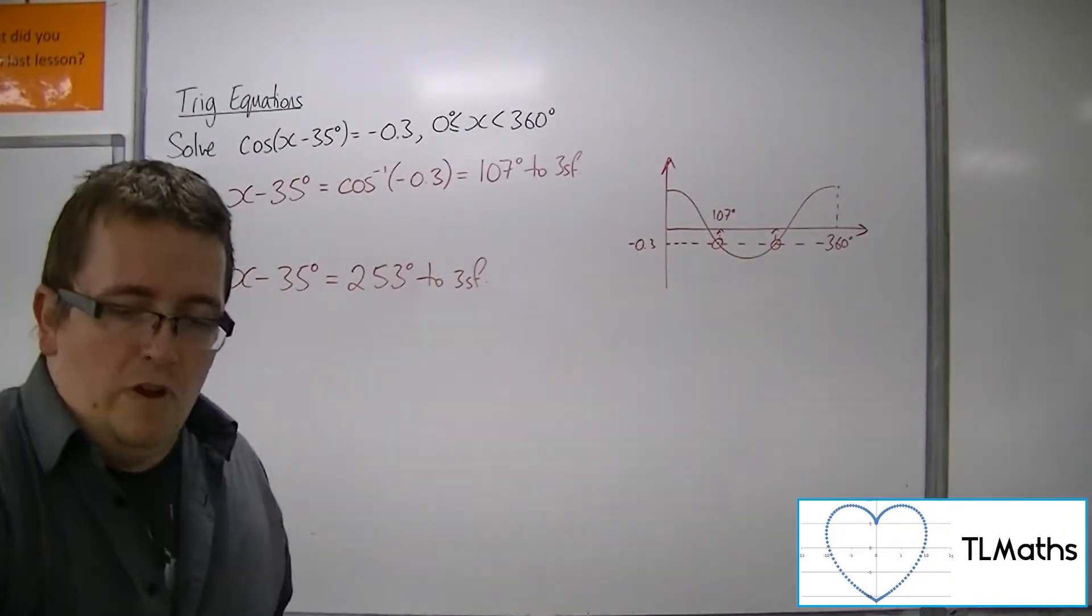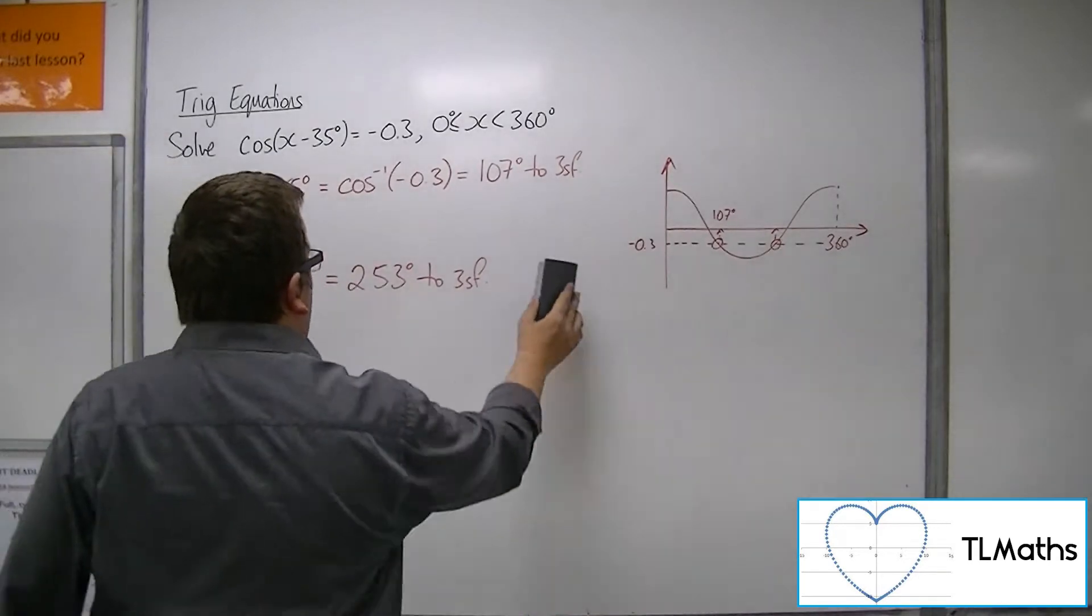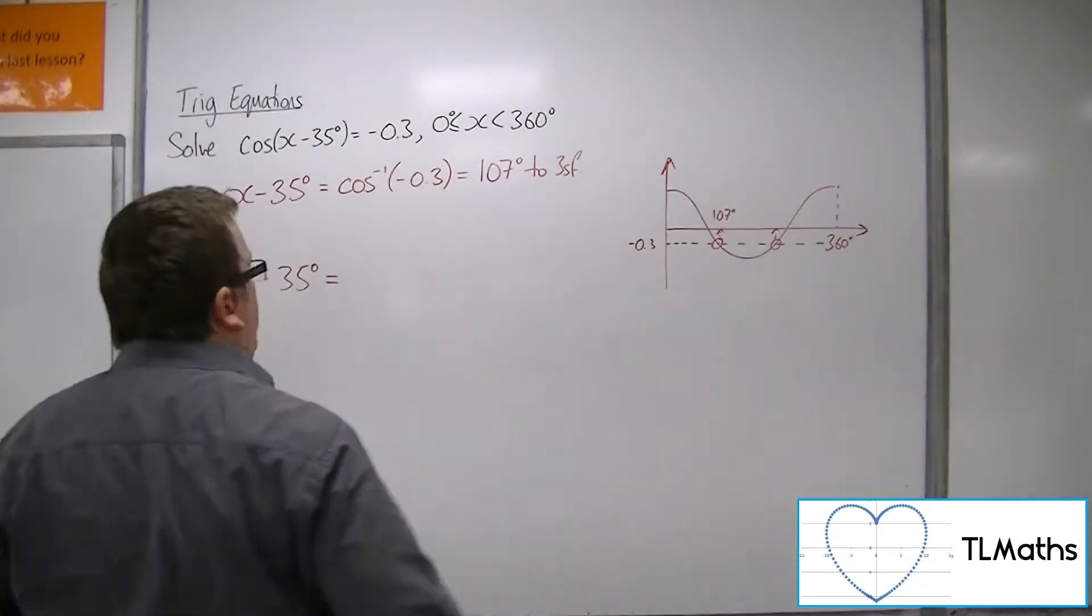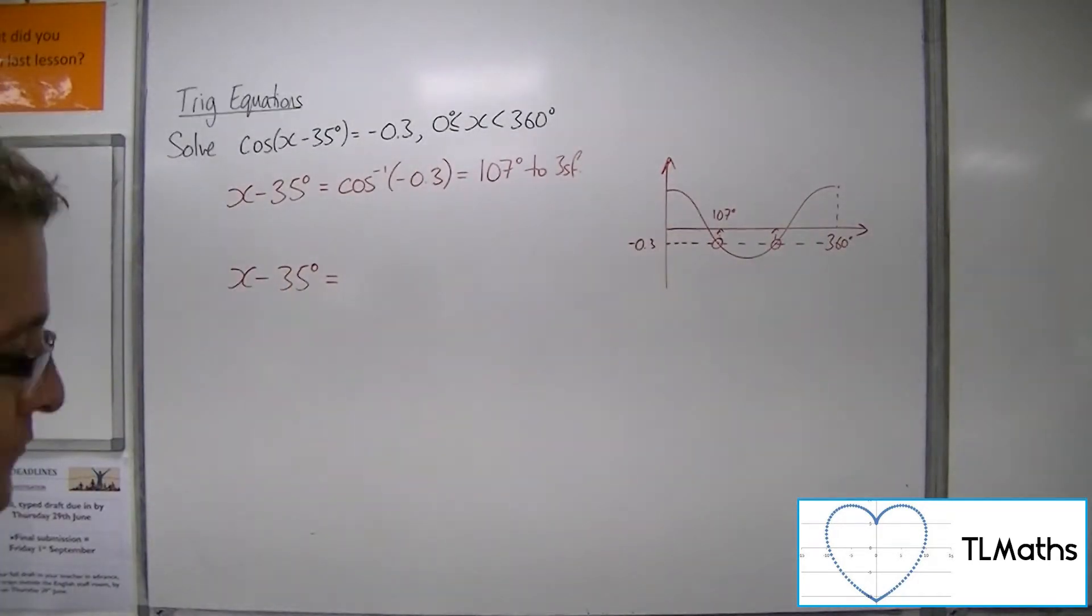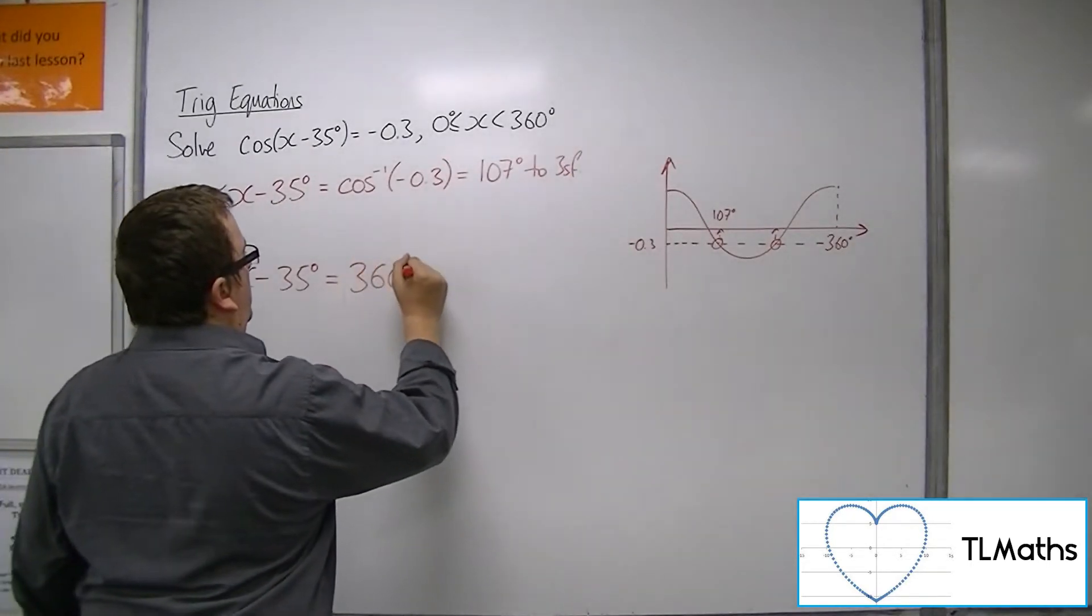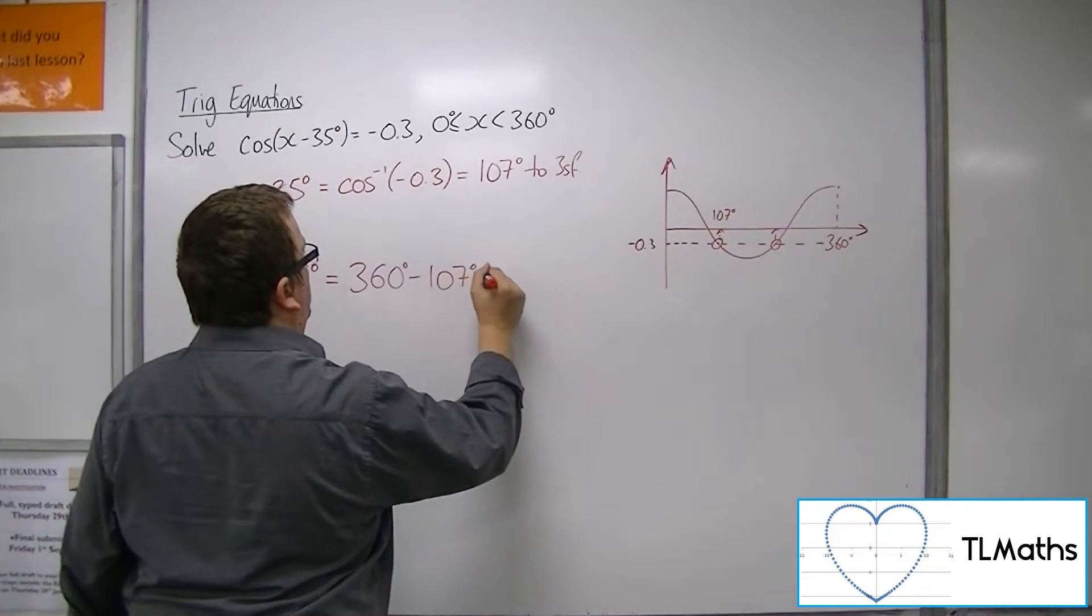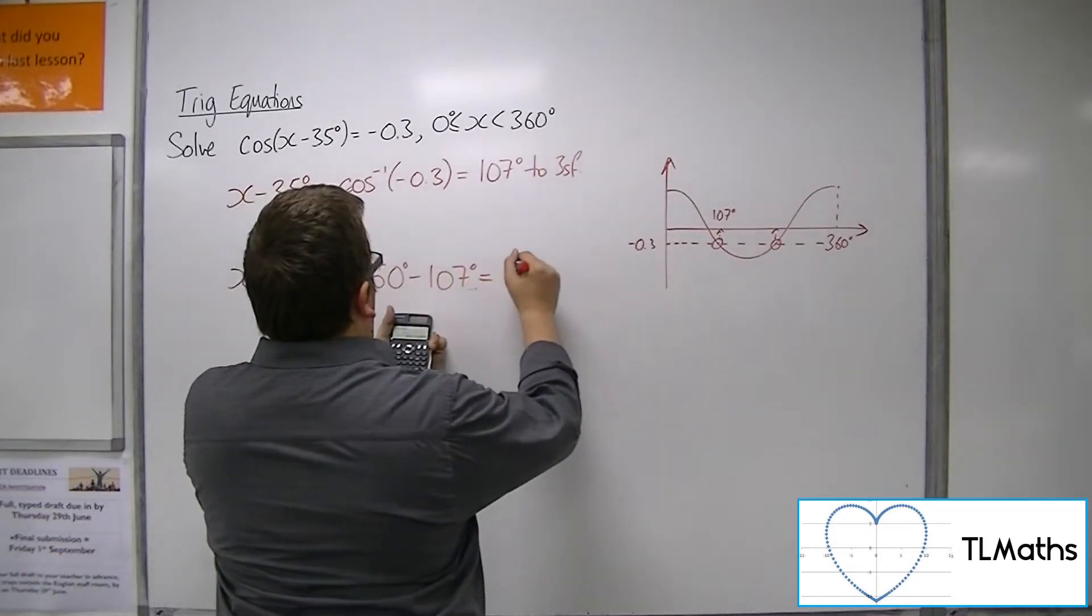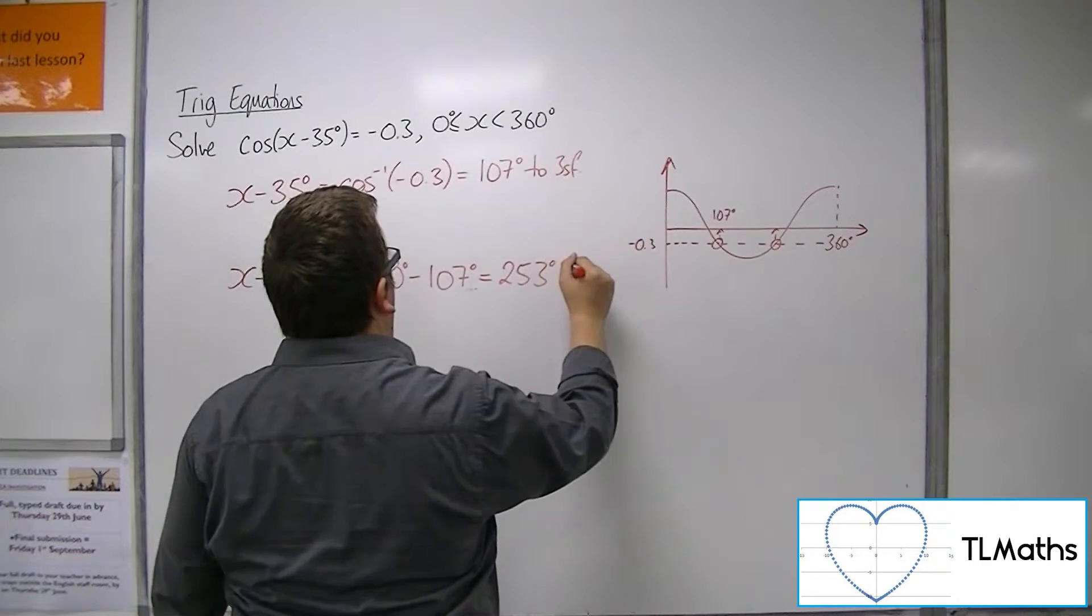I should probably write that on just so we can kind of keep track of where these answers have come from. So 360 take away the 107 gets us the 253 degrees.